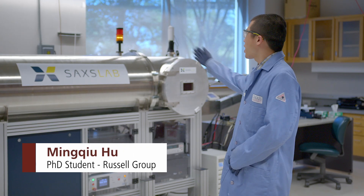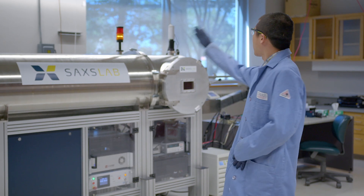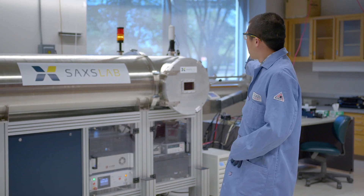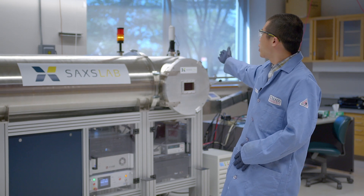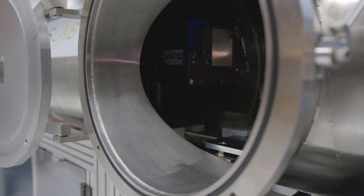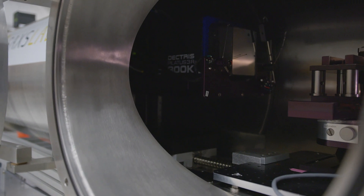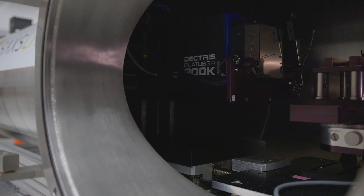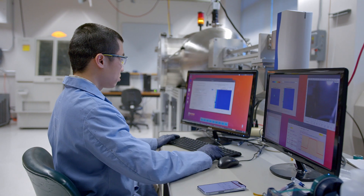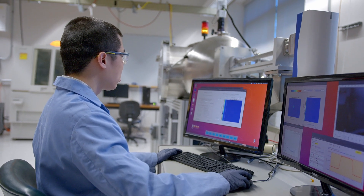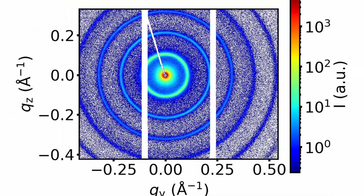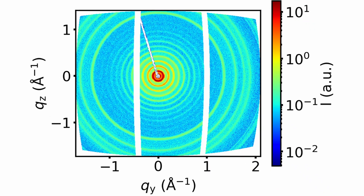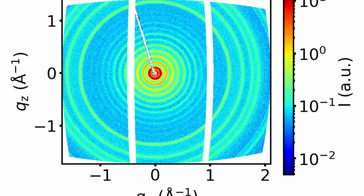Hi, I am Mingqiu Hu in the Russell group and this is the X-ray scattering facility I use a lot for my research. It has an X-ray source, a collimation system, a sample stage in the chamber, and a two-dimensional planar detector that can move on a track. That allows an easy switch between small-angle and wide-angle X-ray scattering. With small-angle scattering we can look at the self-assembled morphologies of co-polymers, and with wide-angle scattering we can look at crystalline structures.